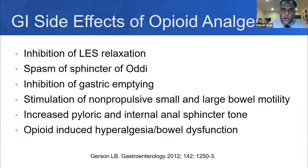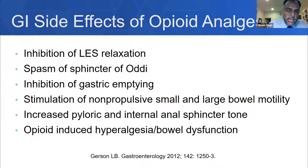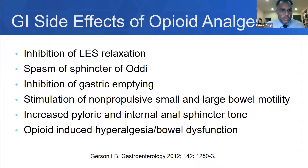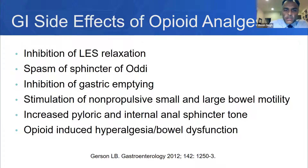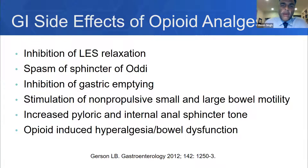Why should we try to avoid opioids? Many GI-associated side effects of opioid analgesics are well-known. This includes inhibition of lower esophageal sphincter relaxation, spasm of the sphincter of Oddi — which has been implicated as a mechanism with the recent IBS-directed drug Viberzi, a weak opioid that can cause sphincter of Oddi spasm — inhibition of gastric emptying resulting in gastroparesis-like symptoms, stimulation of non-propulsive small and large bowel motility, increased pyloric and internal anal sphincter tone, and most concerningly, opioid-induced hyperalgesia and bowel dysfunction, which can result in a separate pain syndrome distinct from the pain of chronic pancreatitis.